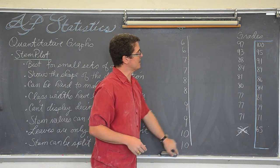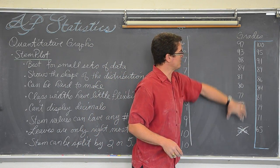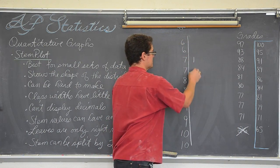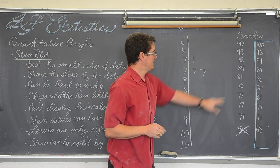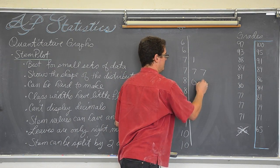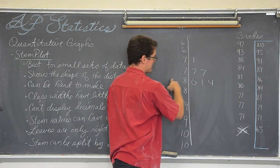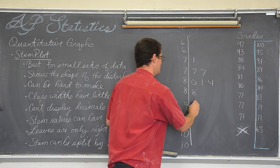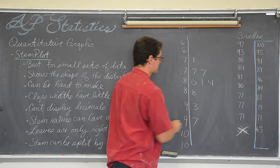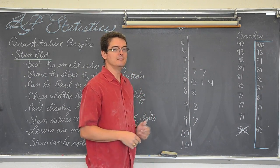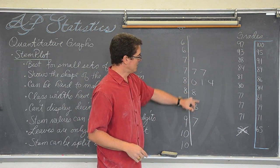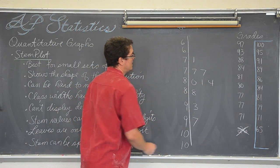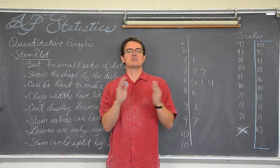When we split the stem like this by two, this is what our data looks like. For the right side: 71, 77, 77, 77, 80, 81, 84 — now 80 to 84 is one row, so 88 goes down to the next row — 88, 93, and finally 97. The stem plot is fairly symmetric with the peak in the middle. I am not going to talk about describing distributions today though — that is a whole other lesson.